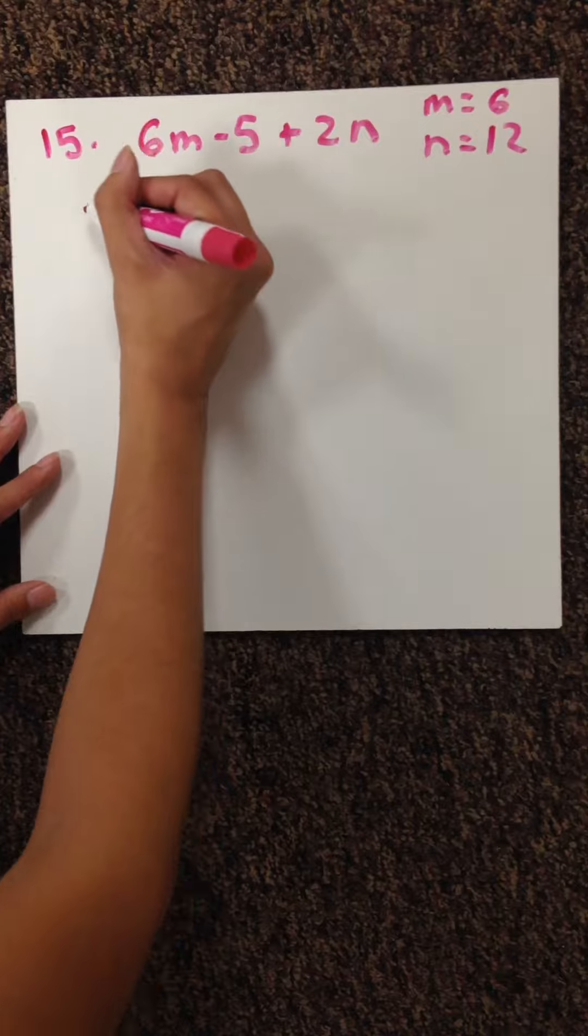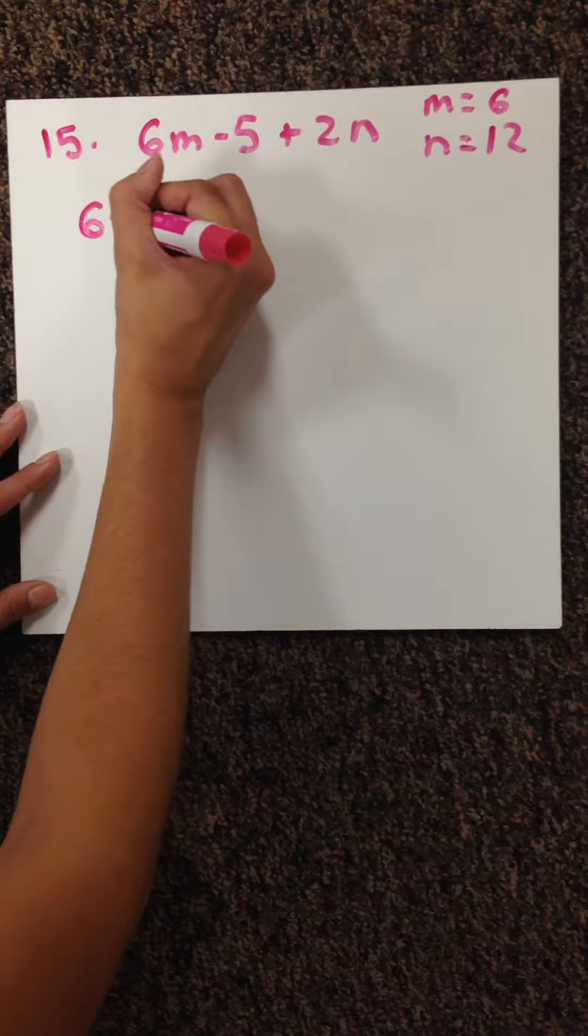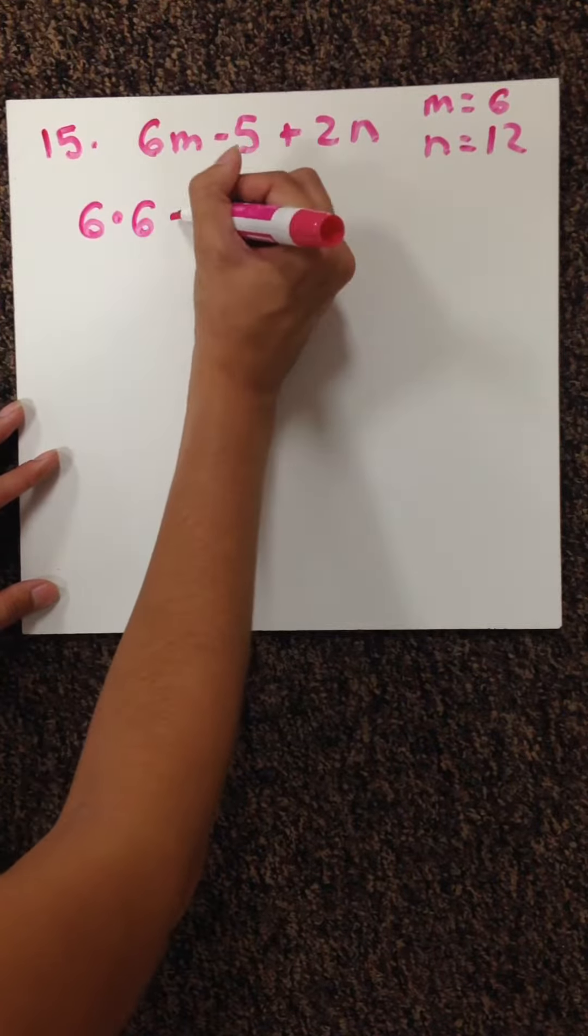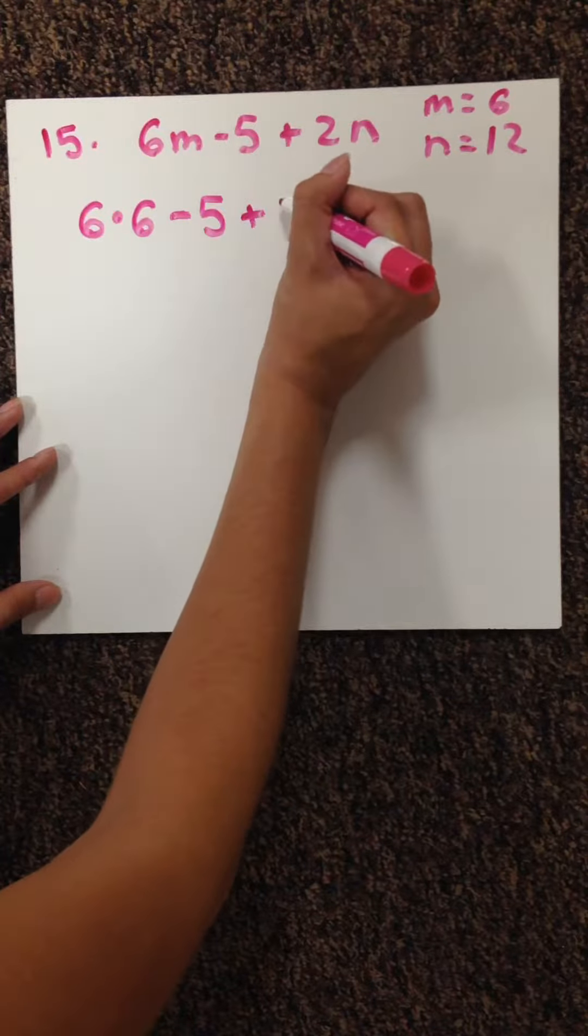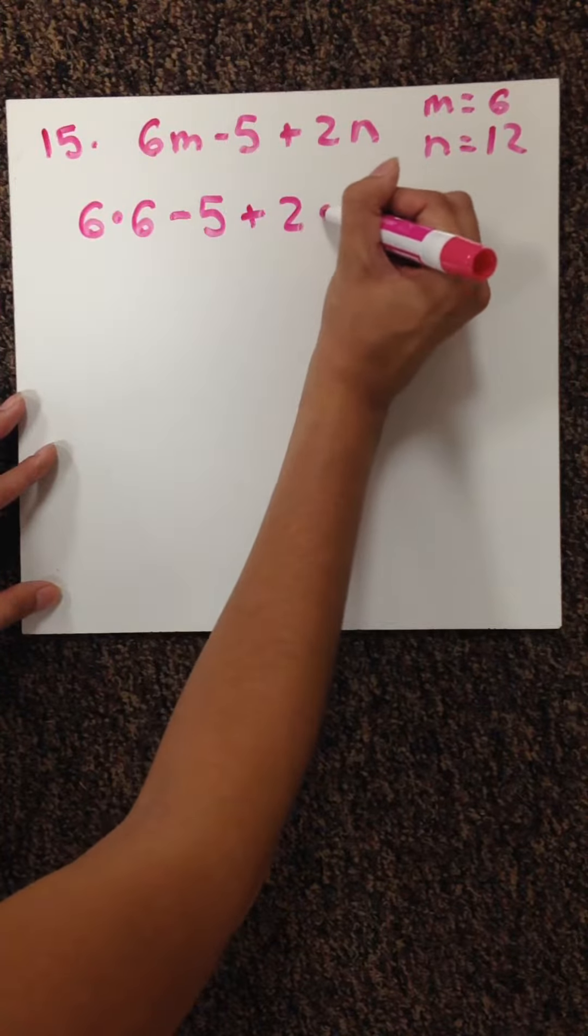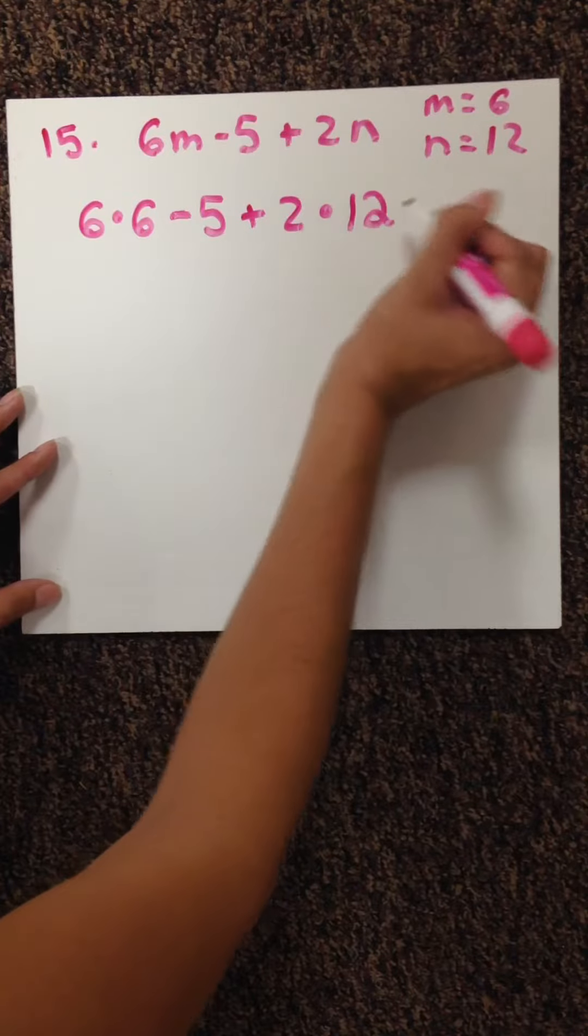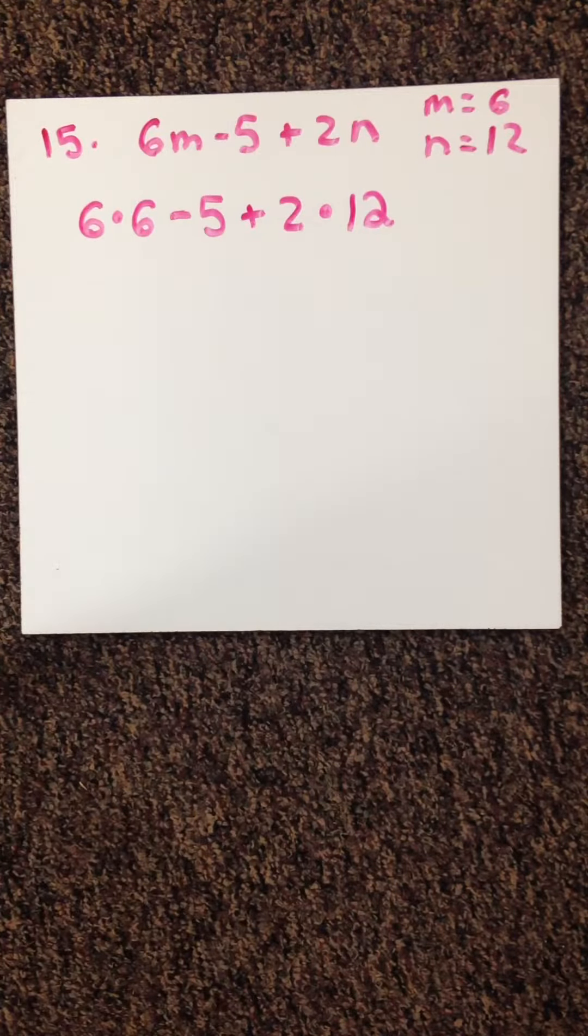We rewrite our equation: 6 times 6 minus 5 plus 2 times 12. So we just took those numbers and plugged them in. This is our new equation.